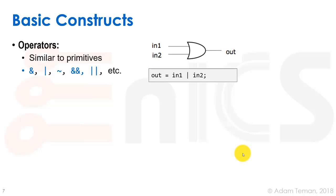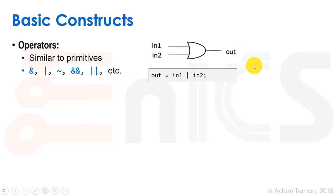The basic constructs we use more often than primitives are operators. We have AND and OR, bitwise AND and bitwise OR, and NOT (tilde or exclamation point). So to describe an OR gate, we write something like 'OUT = IN1 | IN2', which makes the same description as the OR primitive. That's more readable, and we'll see we need to add an 'assign' keyword before it — this is usually how we express Boolean functionality.